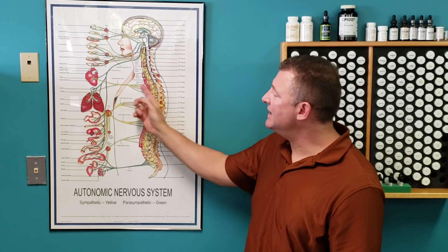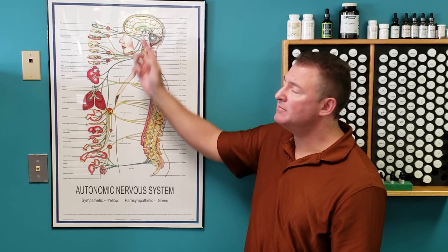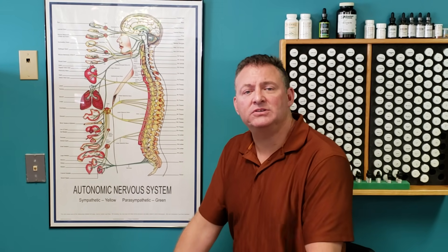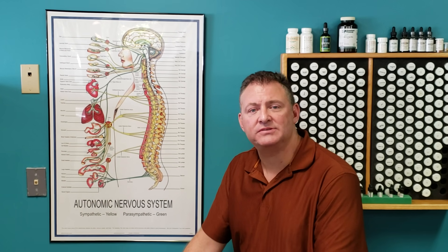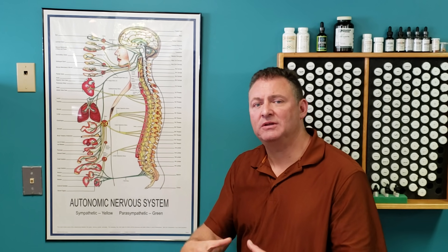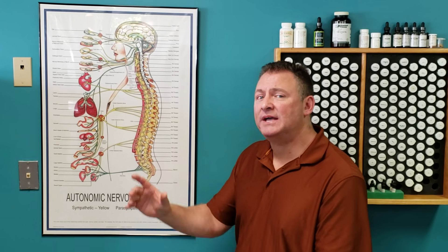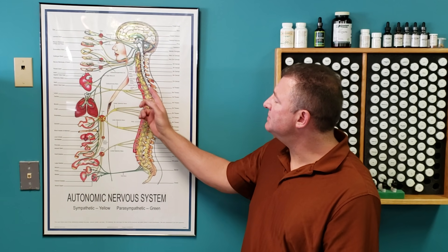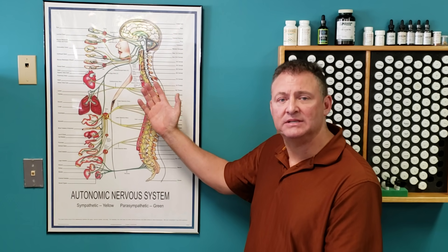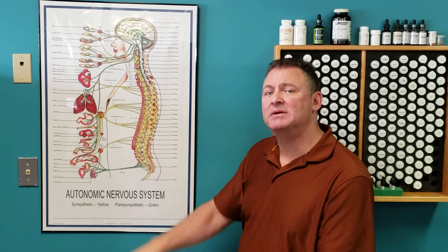Now, as long as this brain can send the signals and the signals get back to the brain, the body parts function like they should. But we have stress. It could be a minor stress. It could be a major stress. But what that stress does is it causes the bones of the spine to misalign, and we call that misalignment a subluxation.